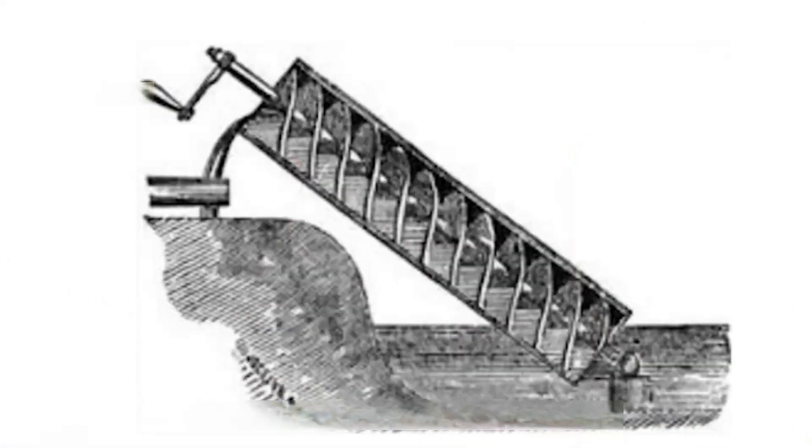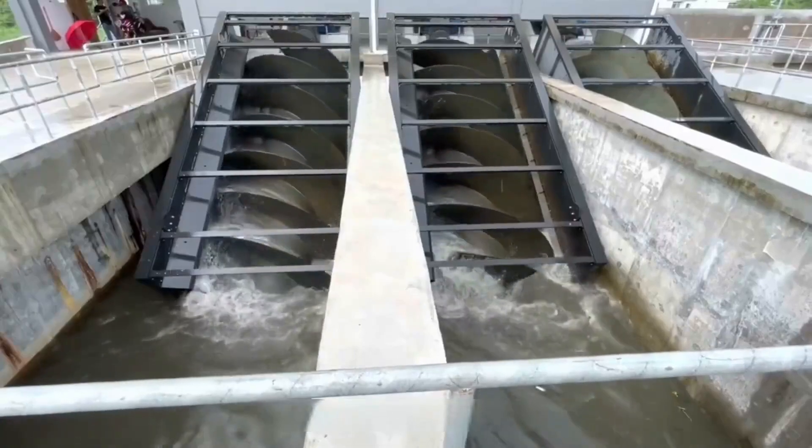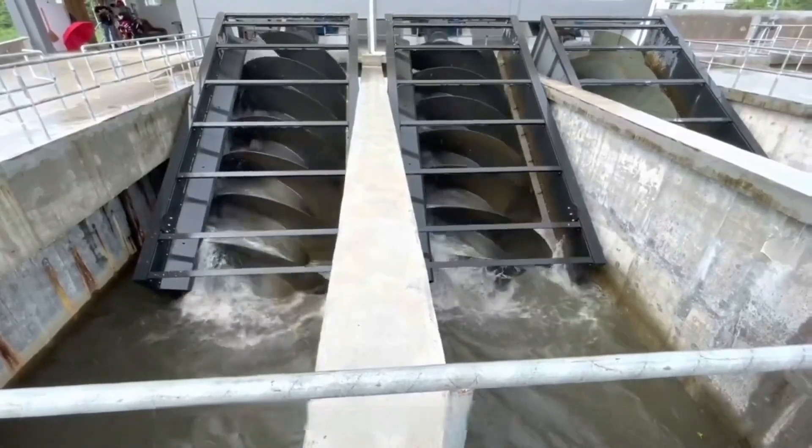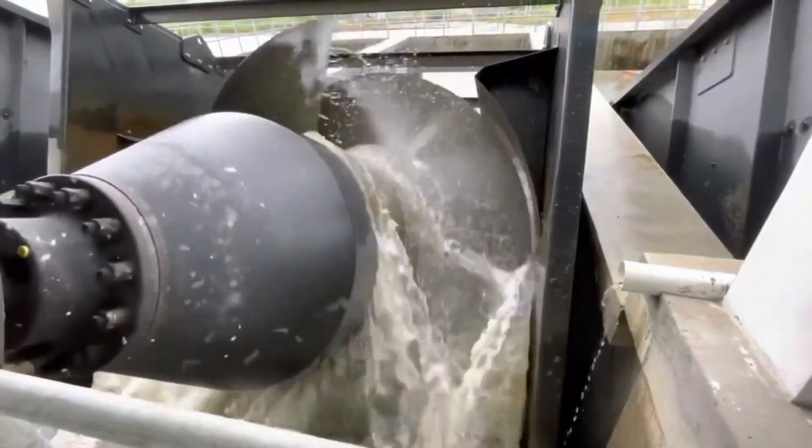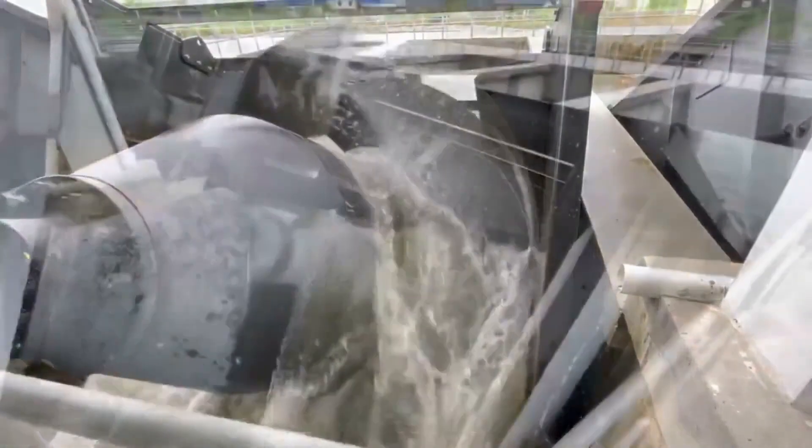The famous Archimedes screw has many uses. For example, it's used to move water upward. Turning the screw causes the blades to move the water upward. Over time, this simple device has evolved.